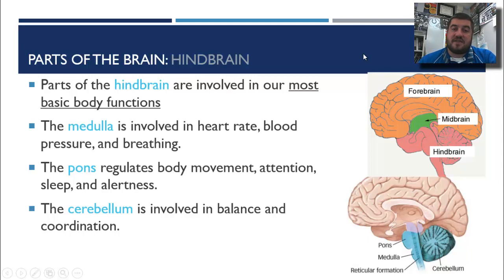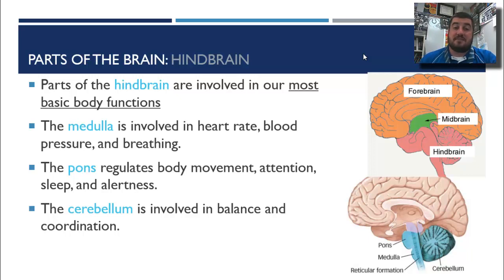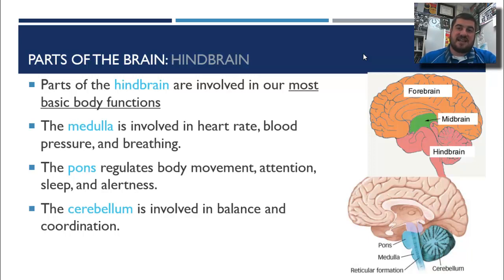Our first part of the brain is the hindbrain. You can see the three classifications: the hindbrain, midbrain, and forebrain. The parts of the hindbrain, from an evolution standpoint, evolved first, so these are our most basic bodily functions. The medulla on the brainstem is involved in heart rate, blood pressure, and breathing. The pons, above the medulla, regulates body movement, attention, sleep, and alertness. The cerebellum is on the back of the brain — it literally means 'little brain' — and is involved in balance and coordination. If any of these are damaged, it's very serious and could threaten a person's life.